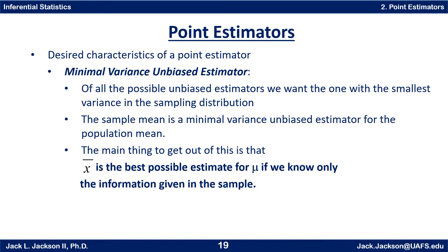It turns out that in some cases there is more than one possible way to get an unbiased estimator for a particular population parameter. In that case we prefer to use the estimator which has a distribution with the least amount of variability. This is called the minimal variance unbiased estimator. For example, the sample mean is a minimal variance unbiased estimator for the population mean. The main thing to take away is that x-bar is the best possible estimate for mu if we know only the information given in the sample.